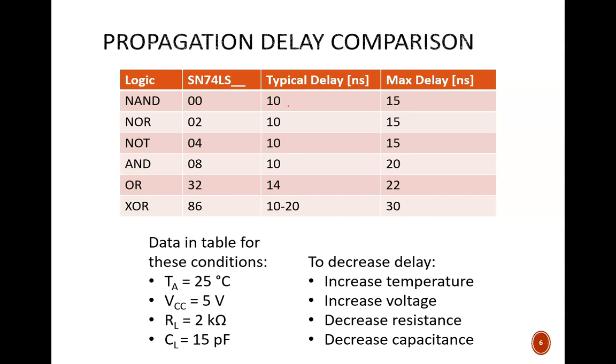Third, note that these are approximations. Data sheets provide a typical delay and a maximum delay. Why not just one fixed number? Because there is variability in the parts. If they only say that a NAND gate requires 10 nanoseconds, then you might have some design issues when you get the bad apple that requires 15 nanoseconds. There is also variability in the environmental conditions in which they are used. The data in this table assumes these conditions: ambient temperature is 25 degrees celsius, driving voltage is 5 volts, load resistance is 2 kilo ohms, and load capacitance is 15 picofarads. These changes will have the effect of decreasing propagation delay: increased temperature, increased voltage, decreased load resistance, and decreased capacitance.